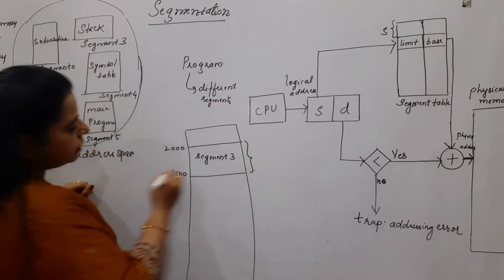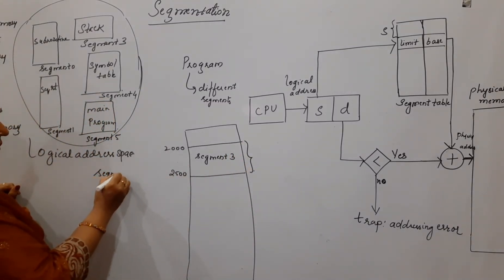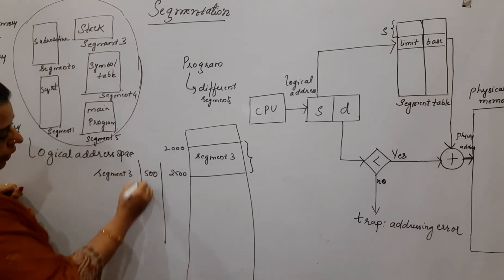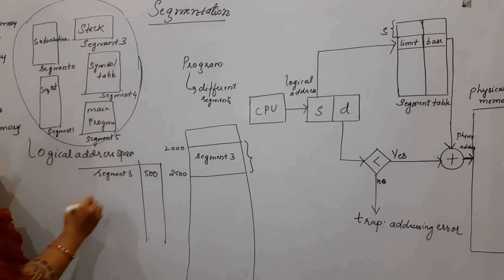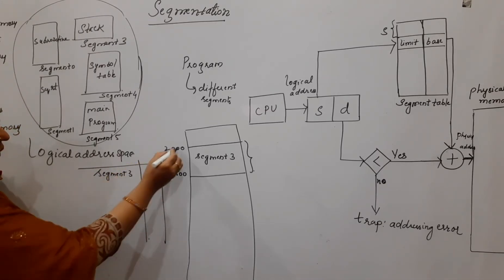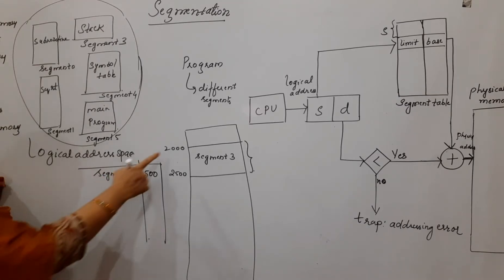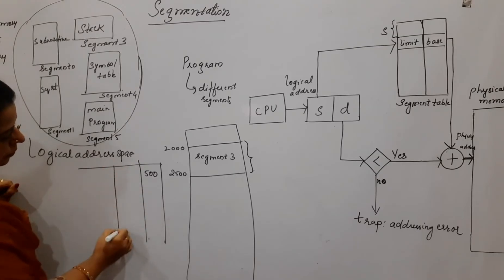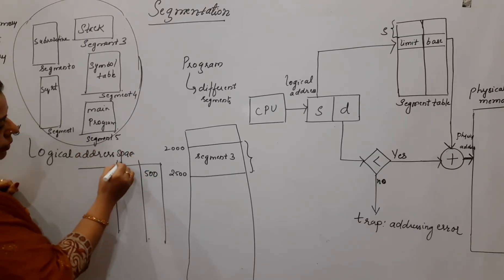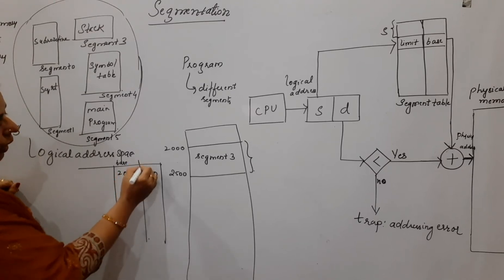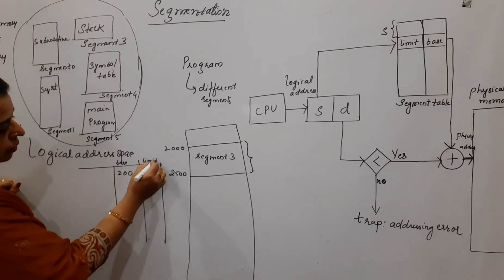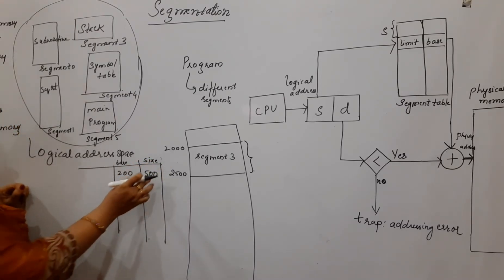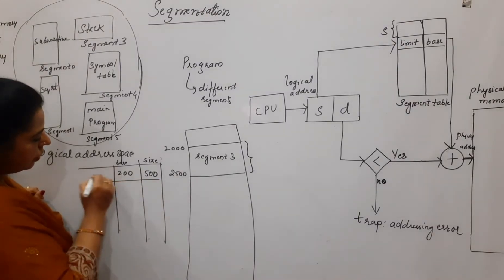So segment three's size is 500. Its base address is 2000 and its size or limit is 500. This information — base address and size — is what we maintain for each segment.